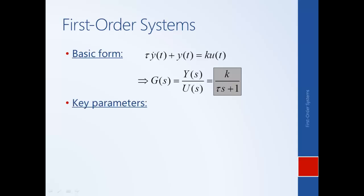We can recognize this transfer function as representing a first order system because it has a single pole — one value of s for which the denominator equals zero. In order to say it has the standard canonical form, we need the denominator to have the form: a constant times s plus one. The key parameters are the time constant tau and the DC gain k. These two parameters completely determine the behavior of a first order system and can be used as requirements for a system.